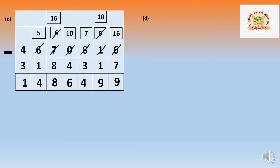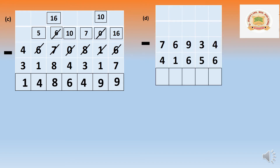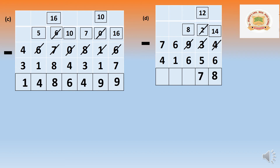Now I will tell you according to two-digit numbers, not by place value. Question d: 76,934 minus 41,656. Cannot minus 4 from 6 in ones. Borrow from 3, making it 14 and 3 becomes 2. Fourteen minus 6 is 8. Cannot minus 2 from 5 in tens — borrow from 9, making it 12 and 9 becomes 8. Twelve minus 5 is 7.